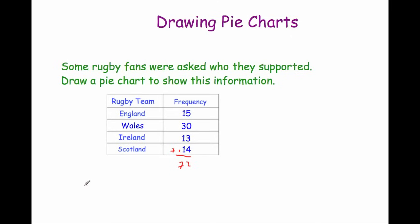Now what we're going to do is divide 360 by that total. Whatever total you get when you add up your frequencies, you divide 360 by that number. That will tell you the angle — the number of degrees per fan or per supporter. So 360 divided by 72 is 5, meaning each fan gets 5 degrees in our pie chart.